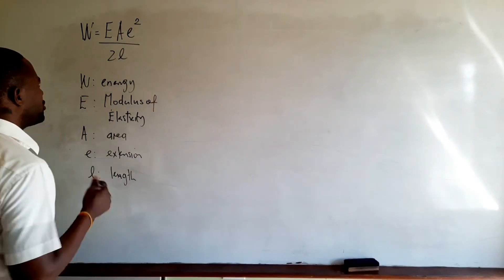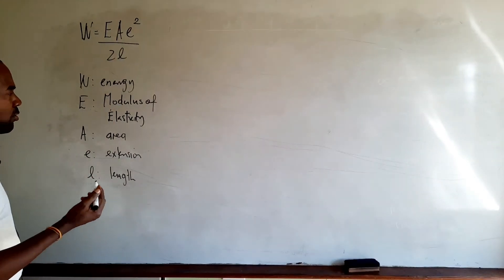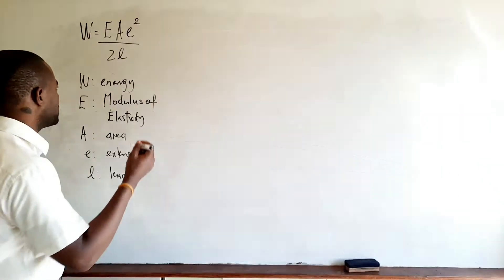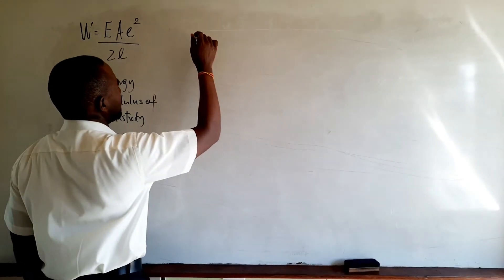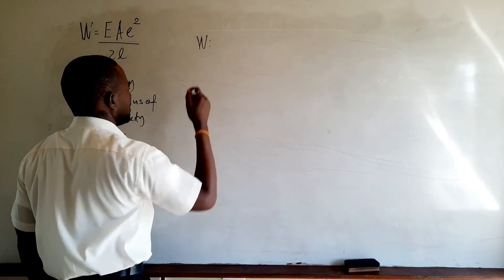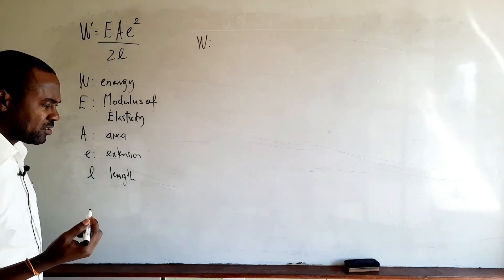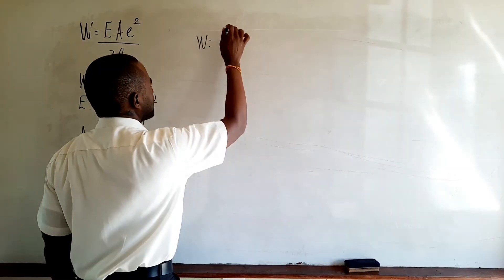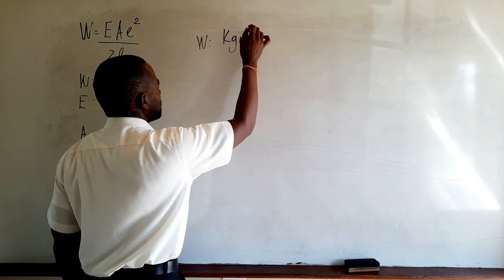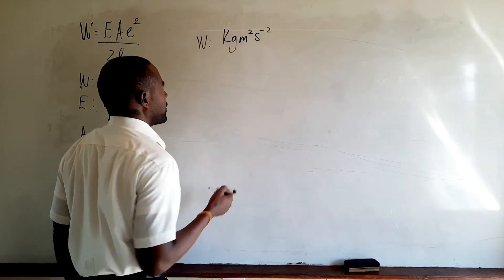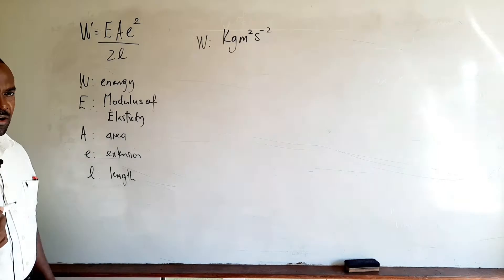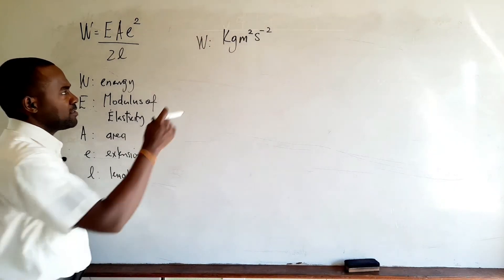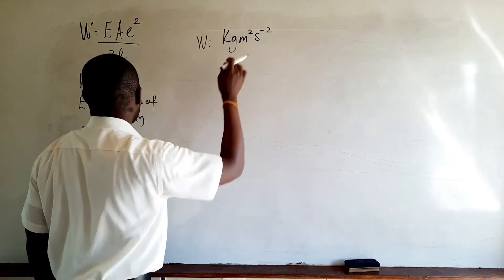We begin with energy. From previous questions we know the unit of energy to be the joule. The base unit of energy W is the joule, which is equal to kilogram meter squared per second squared. So the SI unit of energy is a joule with base unit equivalent kilogram meter squared per second squared.